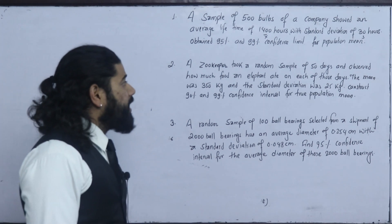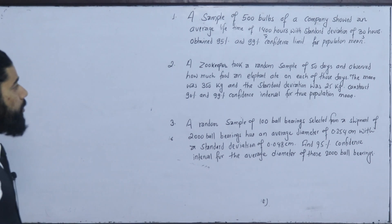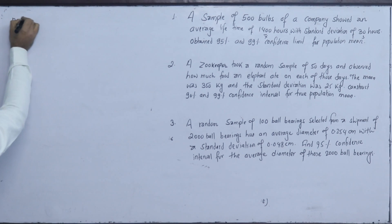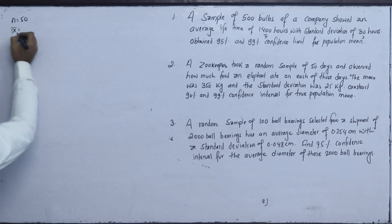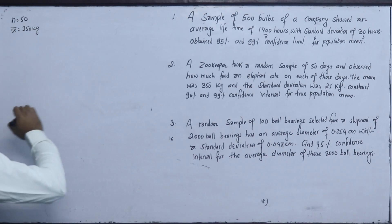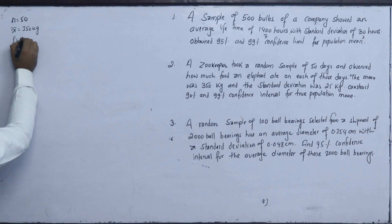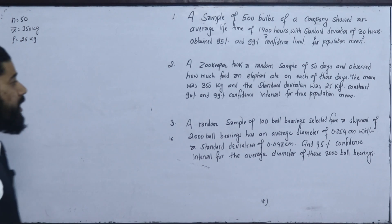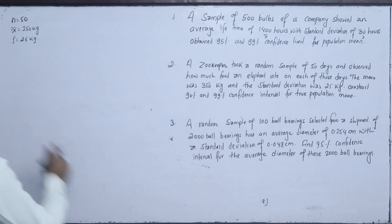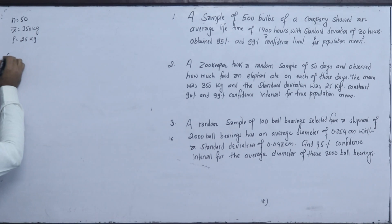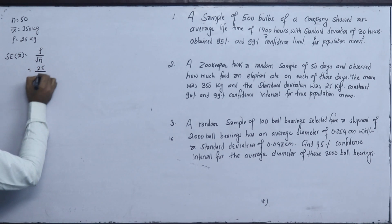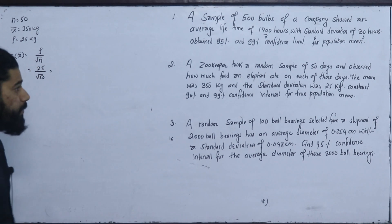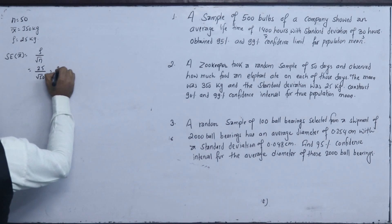Second question: if you take a random sample of 50 days and observe how much food an elephant ate on each of those days, the sample mean was 350 kg and the standard deviation was 25 kg. Consider 90% and 99% confidence intervals. The standard error of the mean is 25 divided by the square root of 50, which equals 3.536.